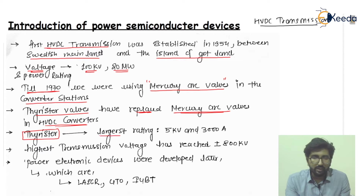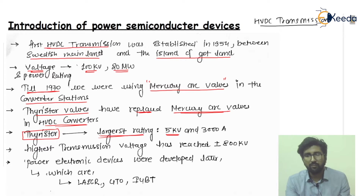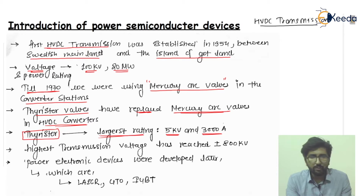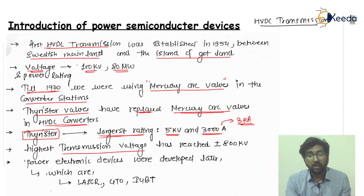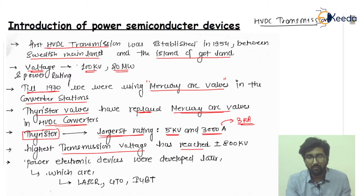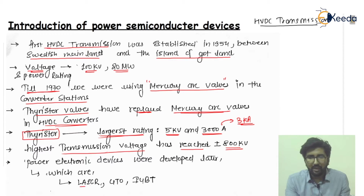If I talk about today, the largest rating related with the thyristor is 5 kilovolts and the current rating is 3000 amperes, or 3 kilo-amperes. The highest transmission voltage has now been raised to plus or minus 800 kilovolts. Power electronic devices developed later include the LASCR, GTO, and the IGBT.